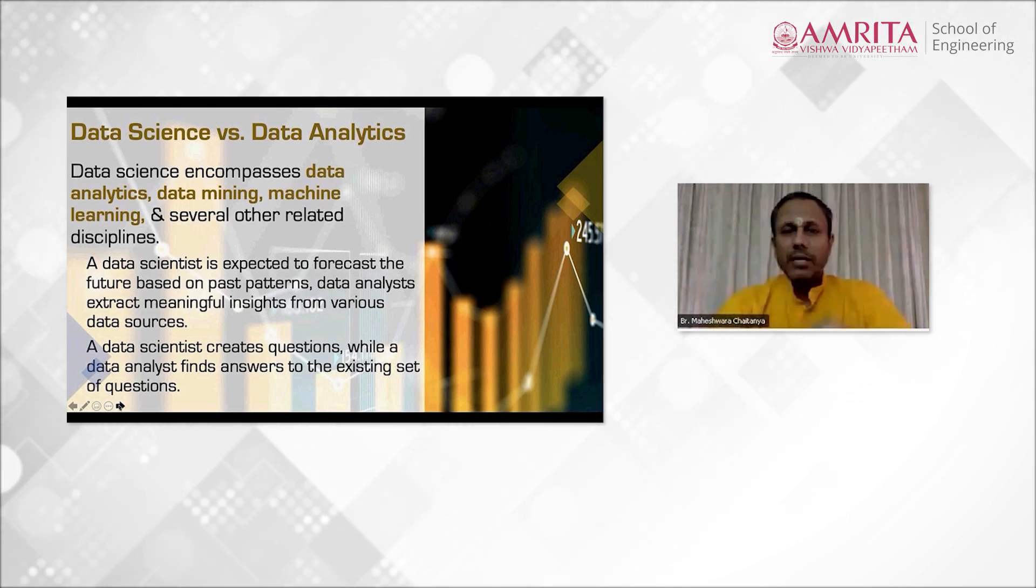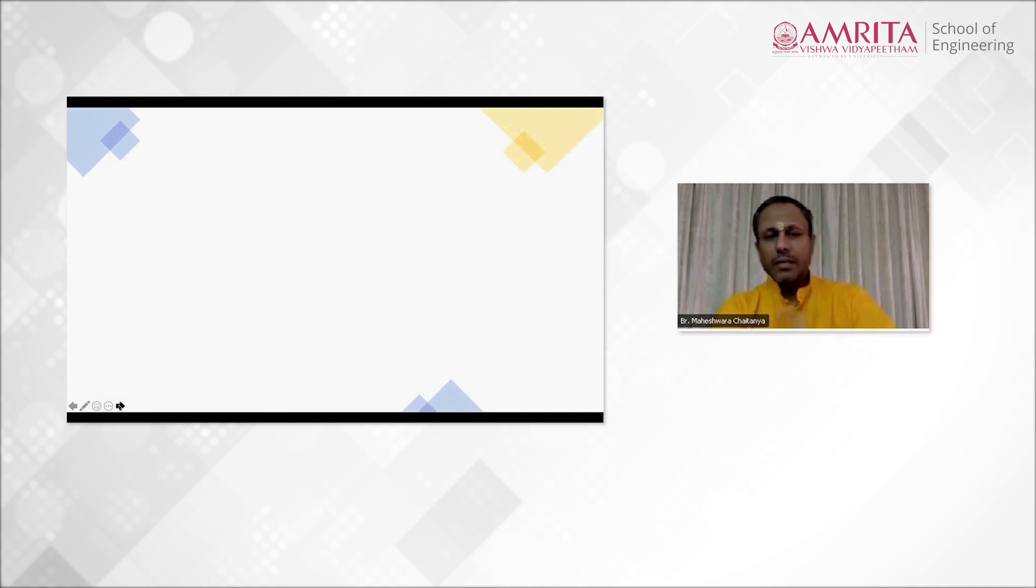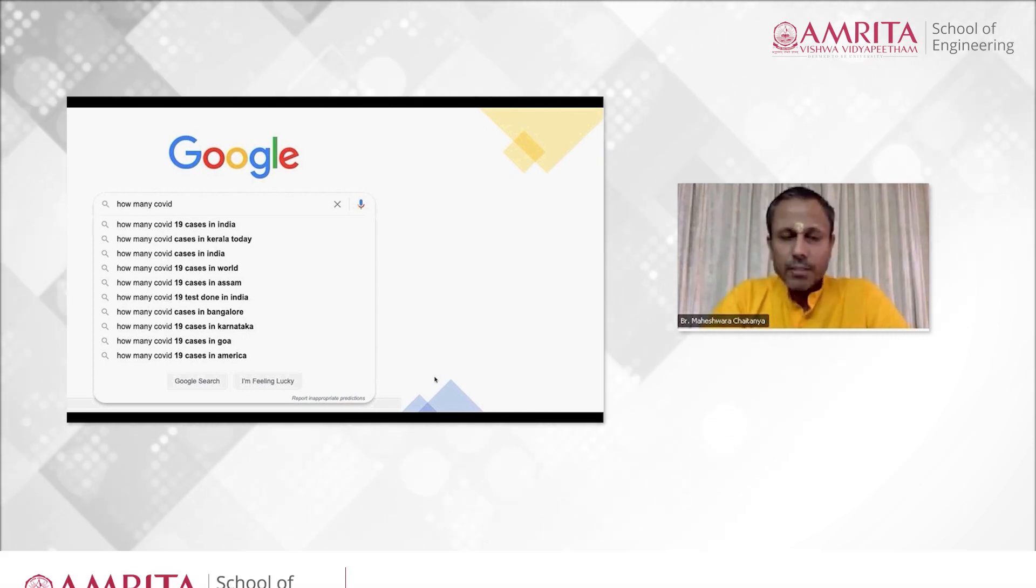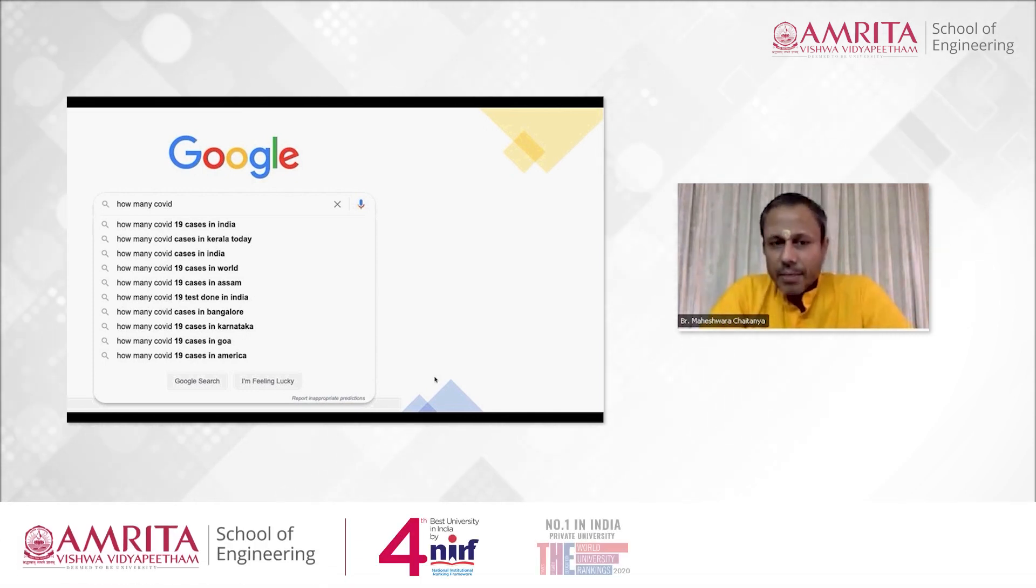The best example to demonstrate is the Google search engine. If you go to Google search engine and type three words, one word, or two words, you can see a list coming out, which is what we call prediction.